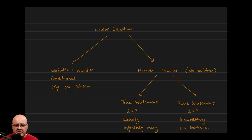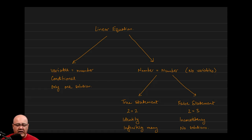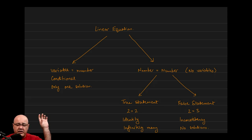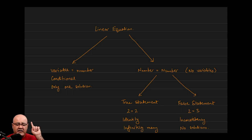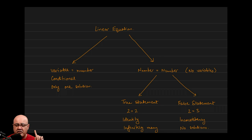How do you recognize if something is a conditional? If after you solve the equation you're left with a variable equals a number — for example, x equals 5 or y equals 3 — then the original equation is classified as a conditional. Conditionals only have one solution. Whatever you get, x equals 3 or y equals 5, that is the only solution. There cannot be any other solutions.